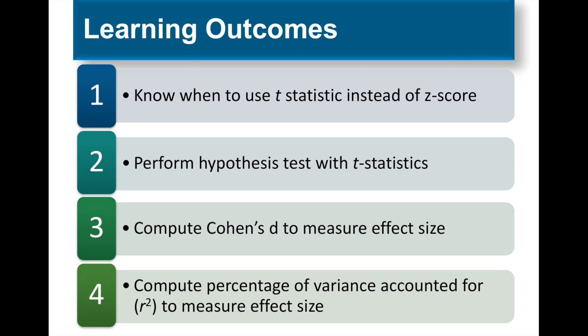Some of the things we're going to talk about today are when we should use the t-statistic instead of a z-score. We're going to perform a hypothesis test the same way we did with z, but this time using a t-statistic instead of a z-statistic. I'll teach you how to compute a Cohen's d to measure effect size, and also how to do r-squared, or percentage of variance accounted for, as an additional measure of effect size.